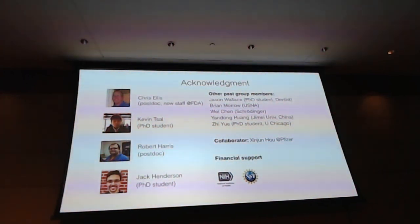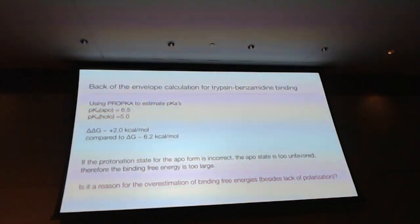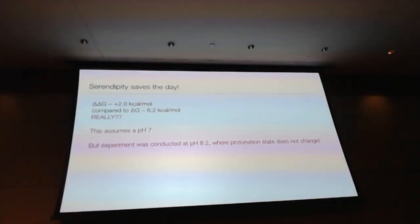Why did we not see an error for the classical trypsin-benzamidine calculation? So I told you there's a big shift effect there. So if you translate that into the free energy change, the error is about 2 kcal per mole. That's very large considering the binding free energy is only about 6 kcal per mole. And why did we not see that? It turns out for 20 years later our interested state is actually pH 8. At pH 8 none of this really matters. So here's the answer. So we assumed that it's pH 7. That's how I got the correction. But it turns out the experiment was conducted at pH 8.2. At that condition the protonation state does not change. All right. So thank you very much.